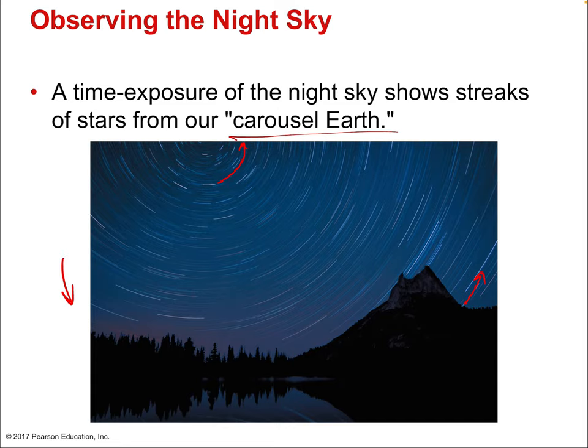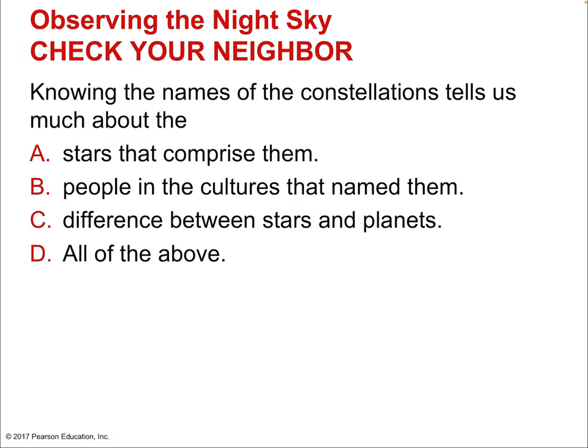Of course, the rising and setting isn't the stars' actual motion — it's the apparent motion caused by Earth spinning on its axis. Stars do move, but their motion relative to us is very, very tiny. Although galaxies are swirling masses of stars moving relative to each other and the galactic center, that motion happens on such a long timescale that it's not measurable from Earth except in extreme cases. Stars appear fixed in place.